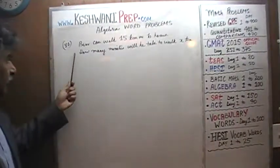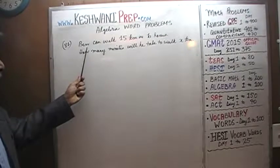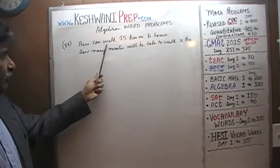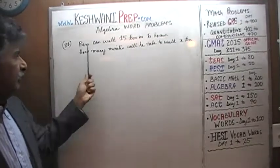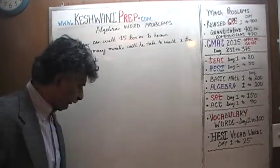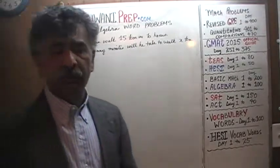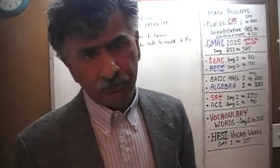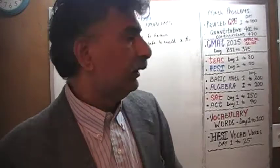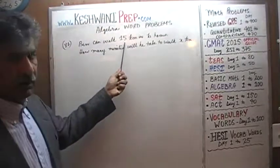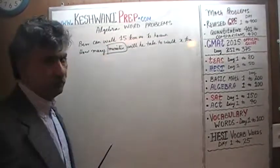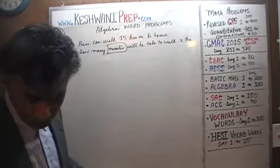Problem number 81, as you can see, is already on the blackboard. We are told that Ben can walk 15 kilometers in B hours — B for Ben. The question is: how many minutes will it take him to walk X kilometers? The very first thing we should notice, as we always do, is to make sure that the units are not mixed up. They are telling us his speed in hours, but the question is asking us how many minutes. So we have to keep that in mind as we go through the problem.